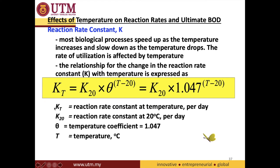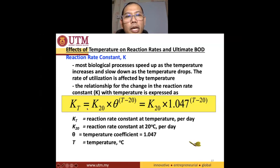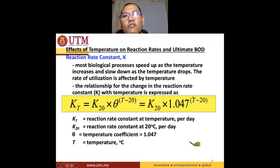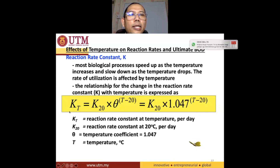Now we would like to look at the relationship between K at one temperature and K at 20 degrees Celsius. Let's say you are doing a BOD experiment and you put it into an incubator at temperature 30. K at temperature 30 is equivalent to K20 times 1.047 to the power of T minus 20. So if T is 30, that means T minus 20 is 10, so it's 1.047 to the power of 10.